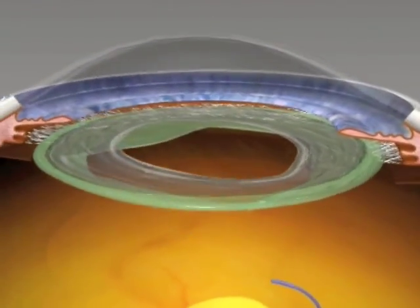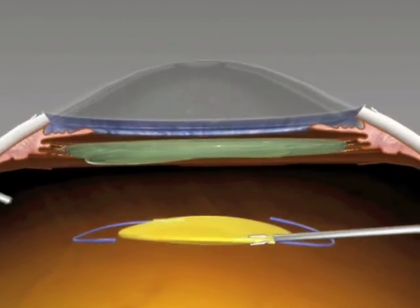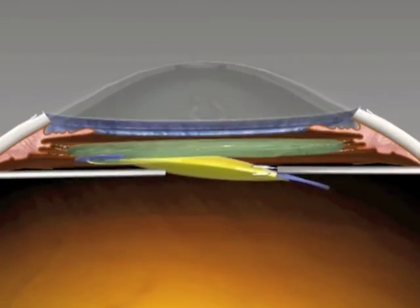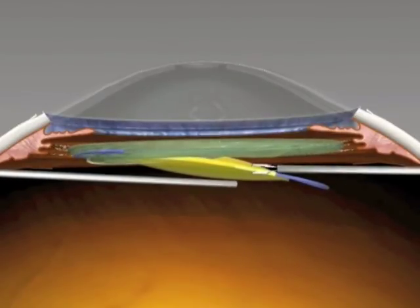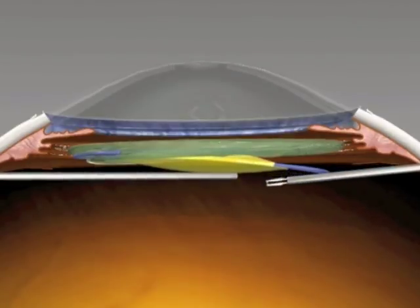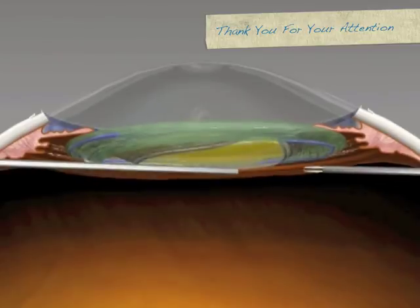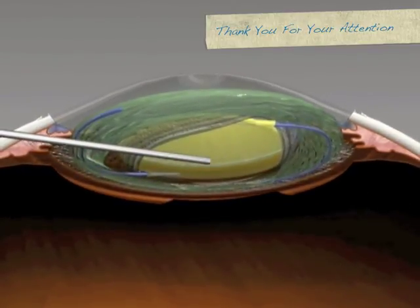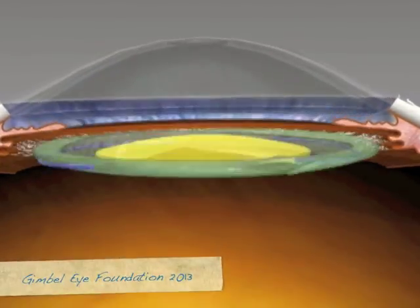This animation illustrates that retinal surgeons can also use membrane optic capture, if the opening in the membrane is the appropriate size or can be made to the appropriate size, rather than removing these lenses or trying to fixate them to the sclera, or to remove them and use an anterior chamber lens. So this is membrane optic capture.